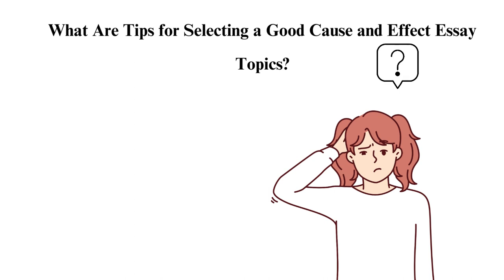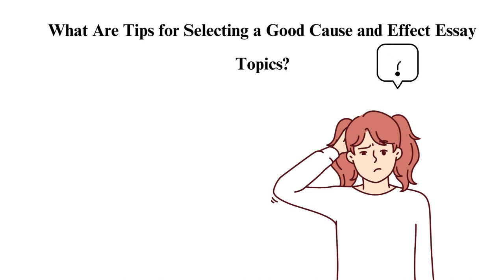Cause and Effect Topic with an Example Essay. This section will highlight how you can write an essay after settling on a cause and effect topic. The important thing is that you know what to include in the three key parts of an essay: intro, body, and conclusion. An introduction has a hook, background information, and a thesis statement. In the body part, you discuss points that support the thesis. In conclusion, you rephrase the thesis statement and summarize the key points.